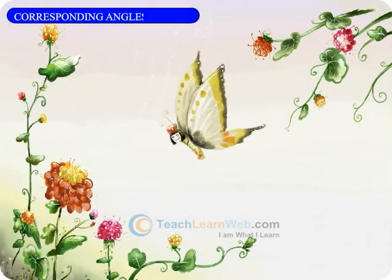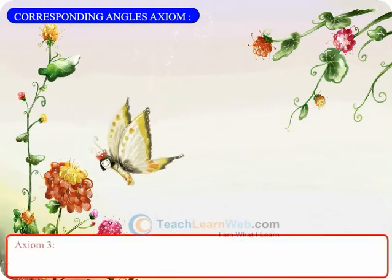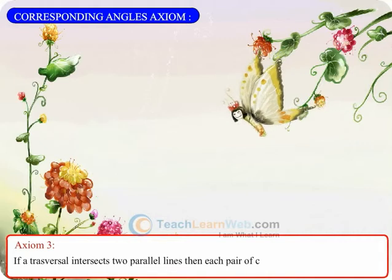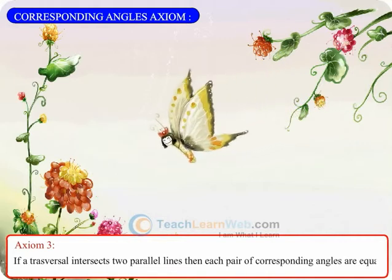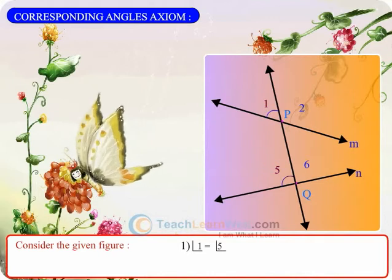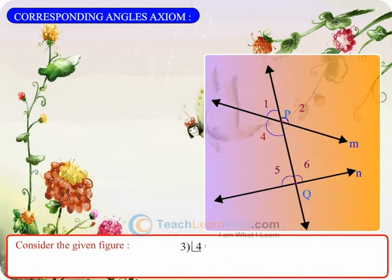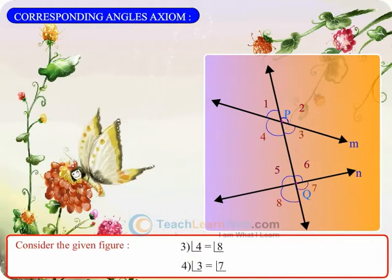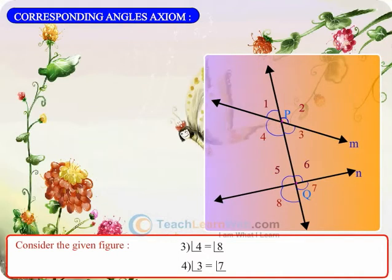Corresponding Angles Axiom. Axiom 3: If a transversal intersects two parallel lines, then each pair of corresponding angles are equal. That is, angle 1 is equal to angle 5, angle 2 is equal to angle 6, angle 4 is equal to angle 8, angle 3 is equal to angle 7. The above axiom is also called as corresponding angles axiom.